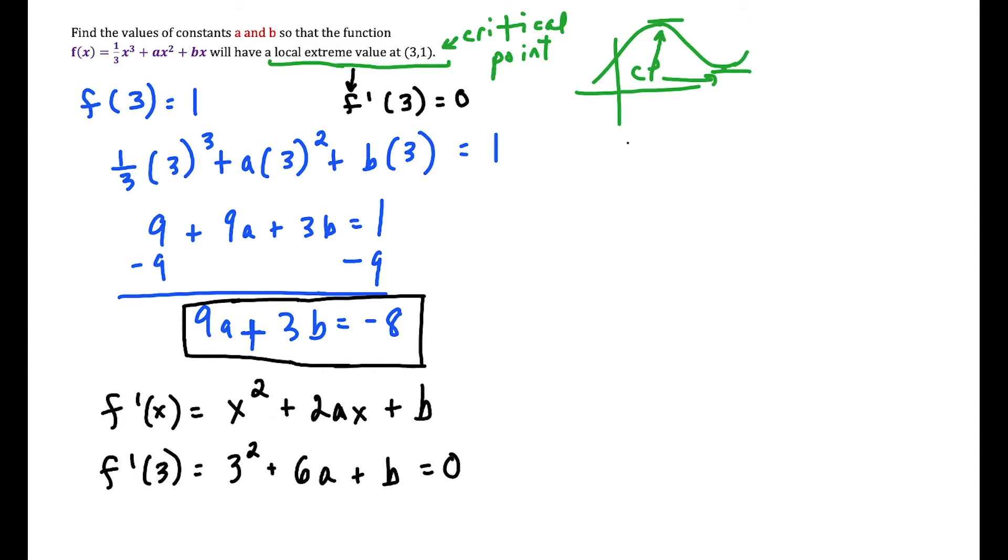...this is going to give us 9 + 6a + b = 0, which gives us the equation 6a + b = -9. So then what we could do is we could write our initial equation here right underneath: 9a + 3b = -8. And now we have a system of equations that we could solve.